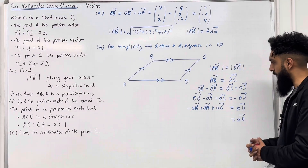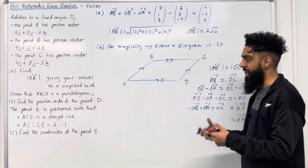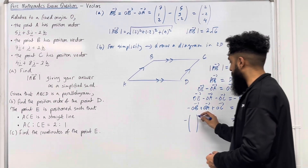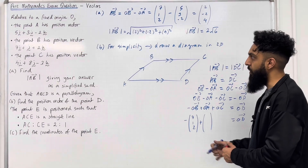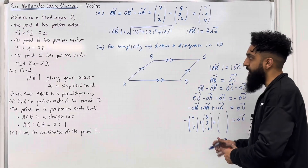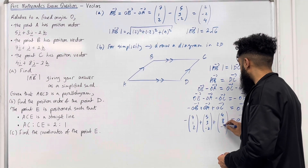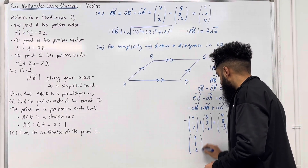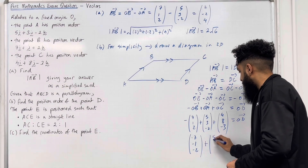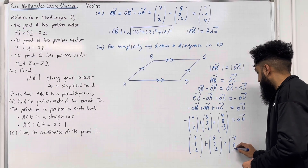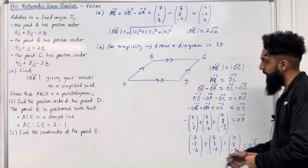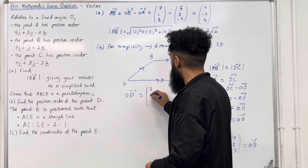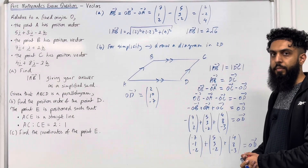Now we can work out the vector OD, which is the position vector of D. So we have −(7, 1, 2) + (5, 3, −2) + (4, 8, −3). Multiplying the first vector by −1 and then adding all three vectors together gives OD = (2, 10, −7). That is the answer to part B.